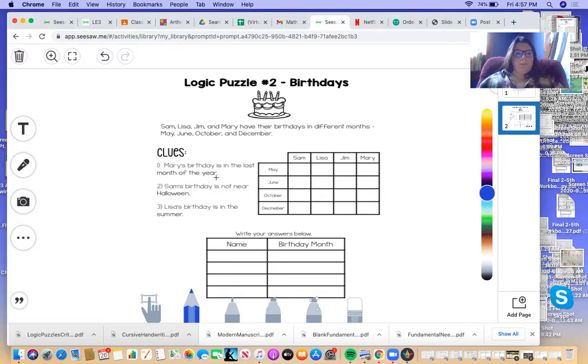Clue one. Mary's birthday is in the last month of the year. Well, we know the last month of the year is December. So I go up to the top here. I find Mary and put a star for December. And then we can X out all the other birthday months for Mary and X off across because nobody else has a birthday in December.